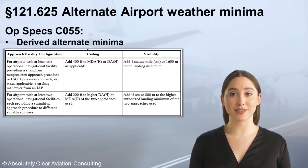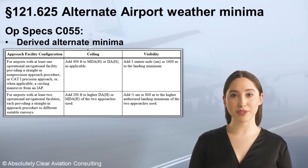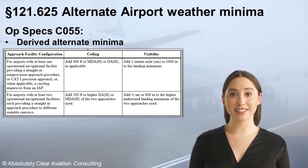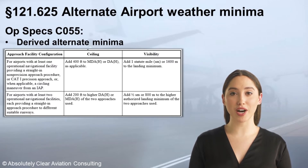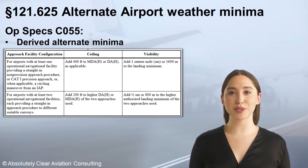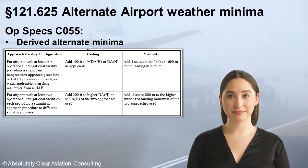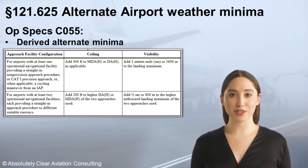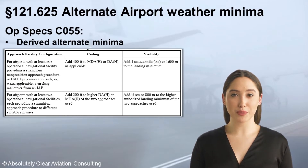Method 2 allows for possibly lower weather minimums when two separate operational navigational facilities, each providing a straight-in approach procedure to different suitable runways, exists. The two operational navigational facilities must be based on separate identifiers, and the different runways may be parallel runways or opposite ends of the same runway pavement. Any two runways considered for this purpose must be suitable both in terms of the forecast wind direction and aircraft performance requirements. The minimum ceiling may be derived by adding only 200 feet to the higher of the two published decision heights, and the minimum visibility may be derived by adding only ½ statute mile to the higher of the two published landing minimums.